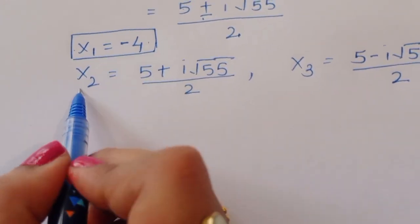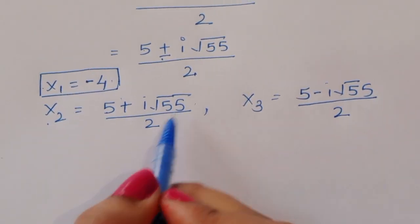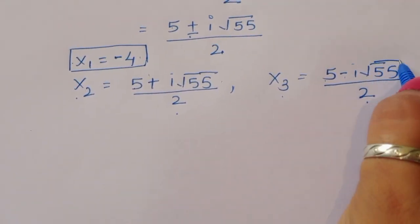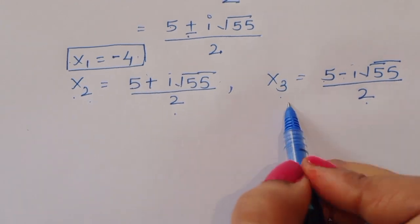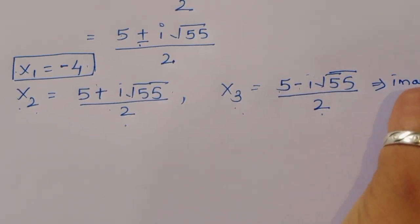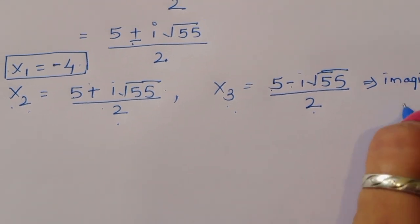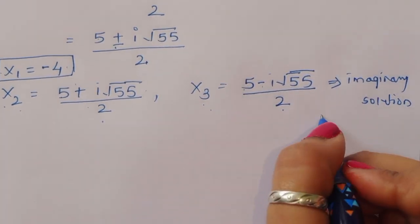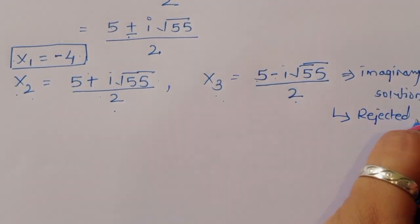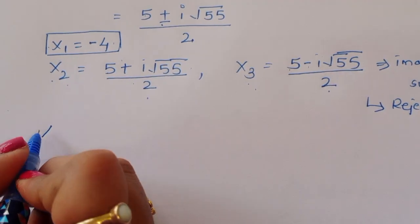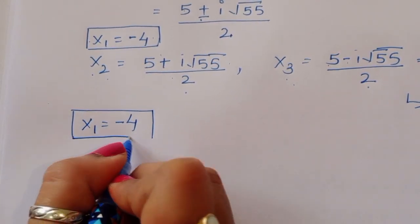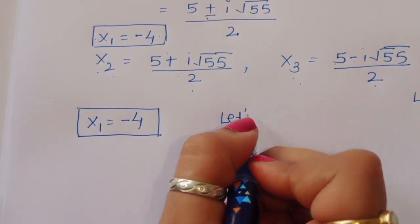x₂ and x₃ are imaginary solutions, so they are rejected. Therefore the only real solution is x₁ equals minus 4.